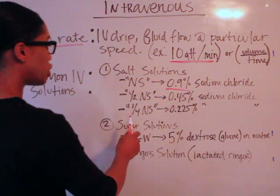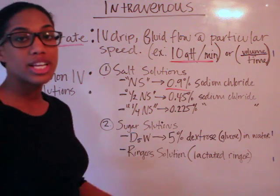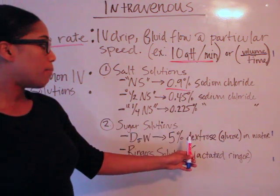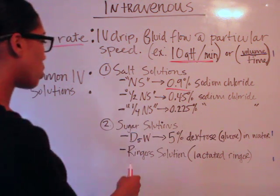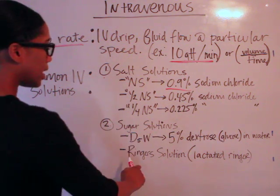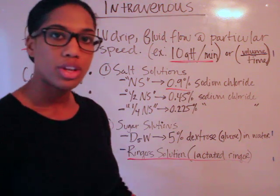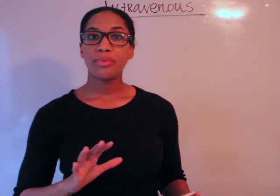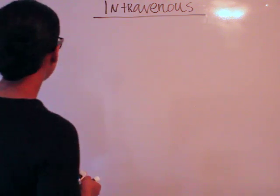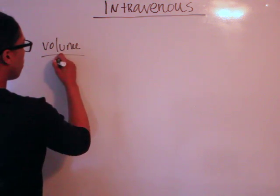Moving on to sugar solutions, we have D5W, which is a 5% dextrose glucose in water. The second sugar solution is the Ringer's solution, also commonly known as Lactated Ringer's. Now that we have a basic background on different solutions and the concept of volume over time, let's work out an actual problem.